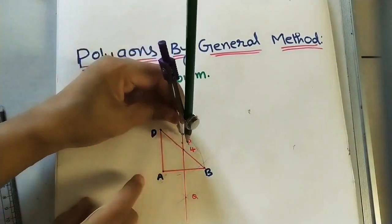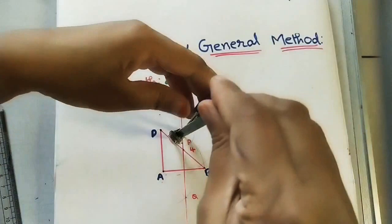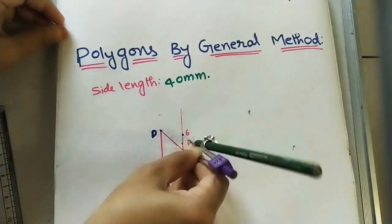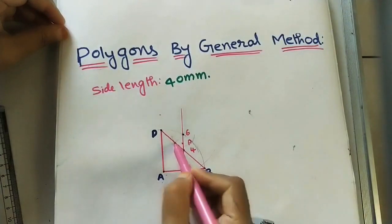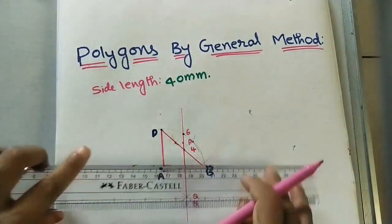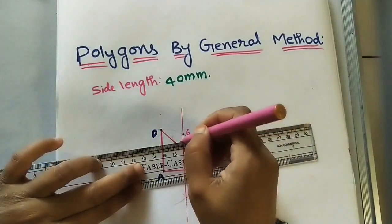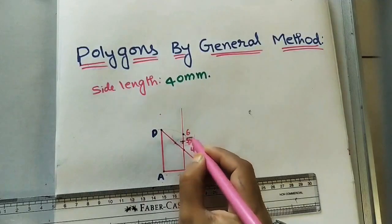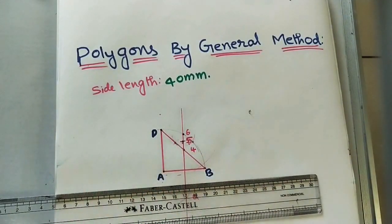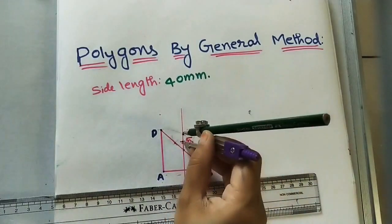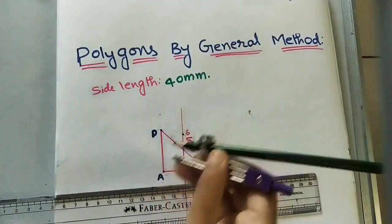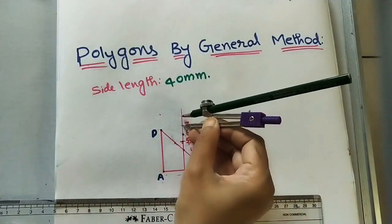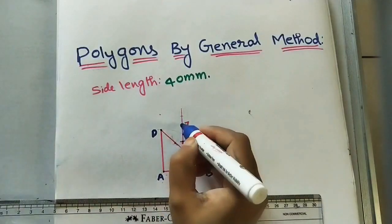To find the fifth point, we need the midpoint between four and six. Take more than half of the four-six distance, and with six as center draw an arc, then with four as center cut the arcs to get intersection points — join those to get the midpoint, which is point five. For point seven, the distance four-five equals five-six equals six-seven, so mark the same distance to get seven, eight, and so on.